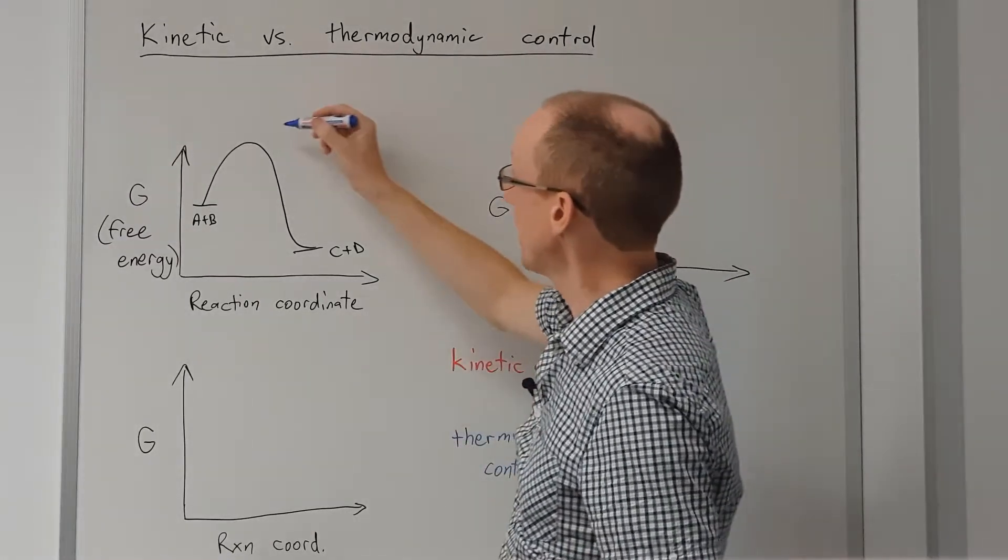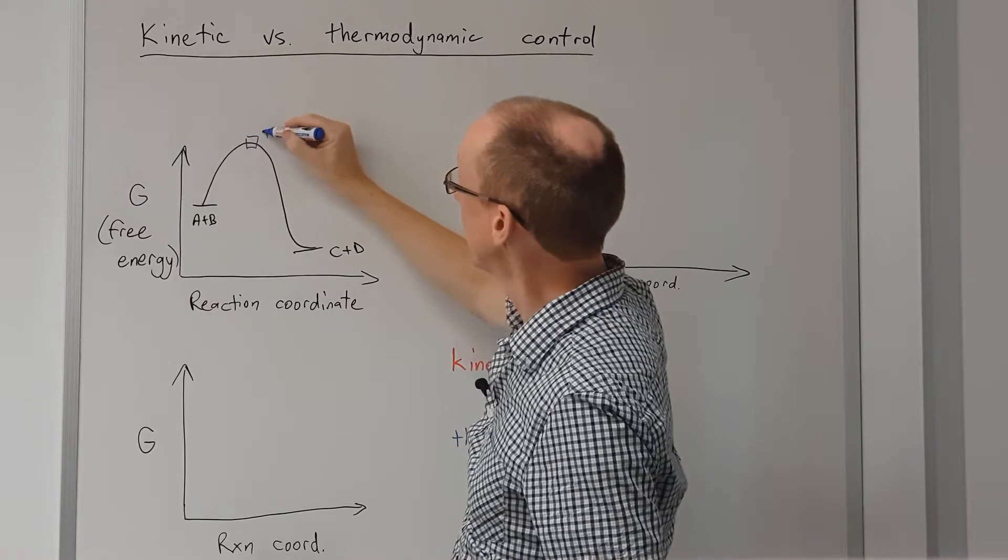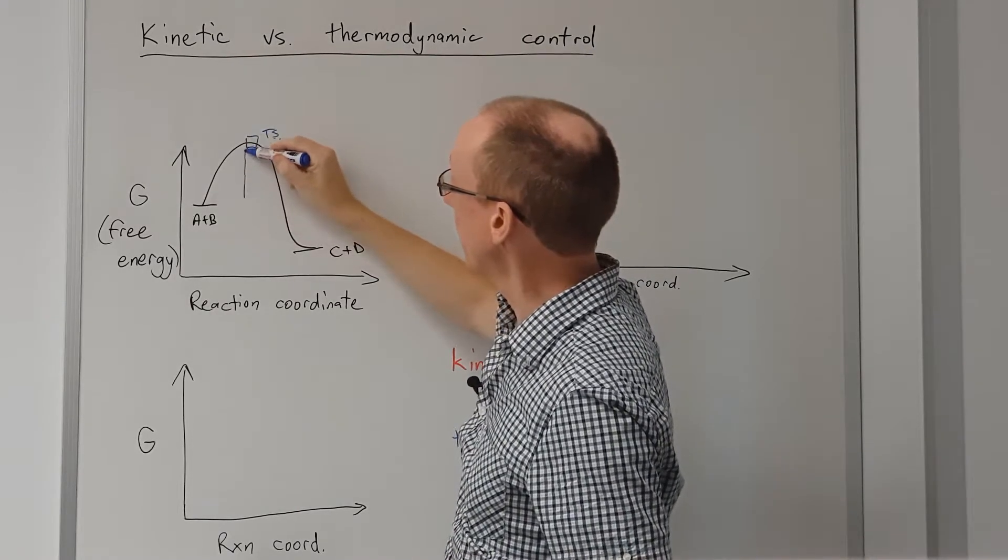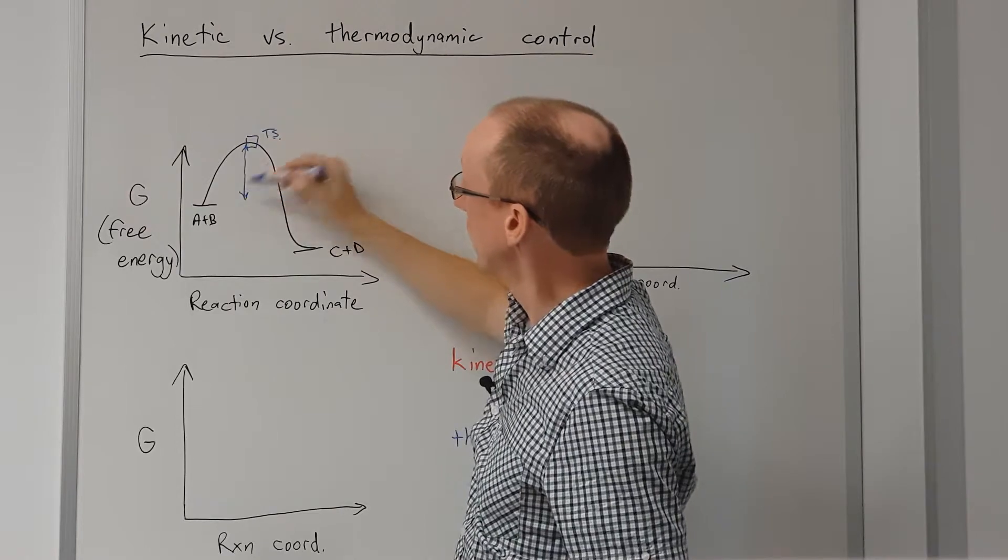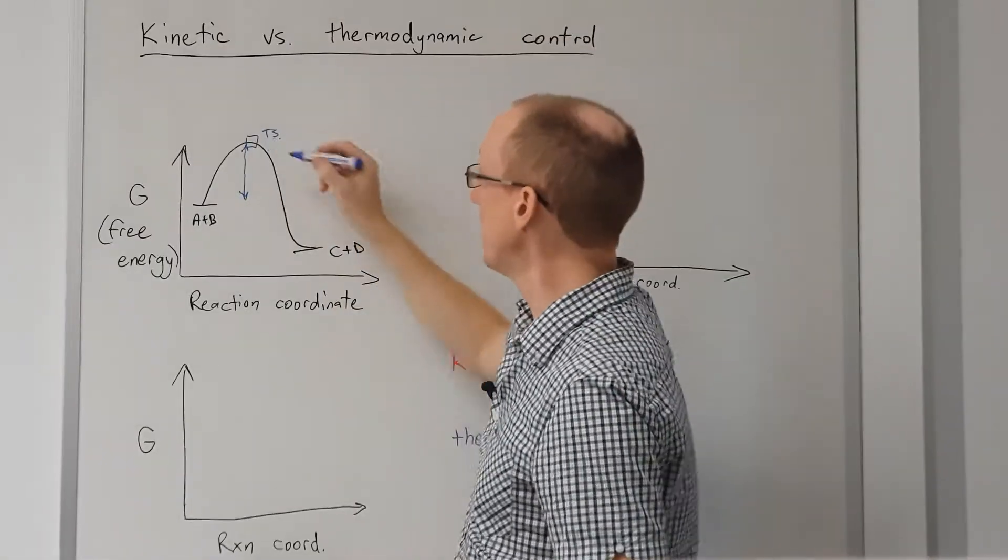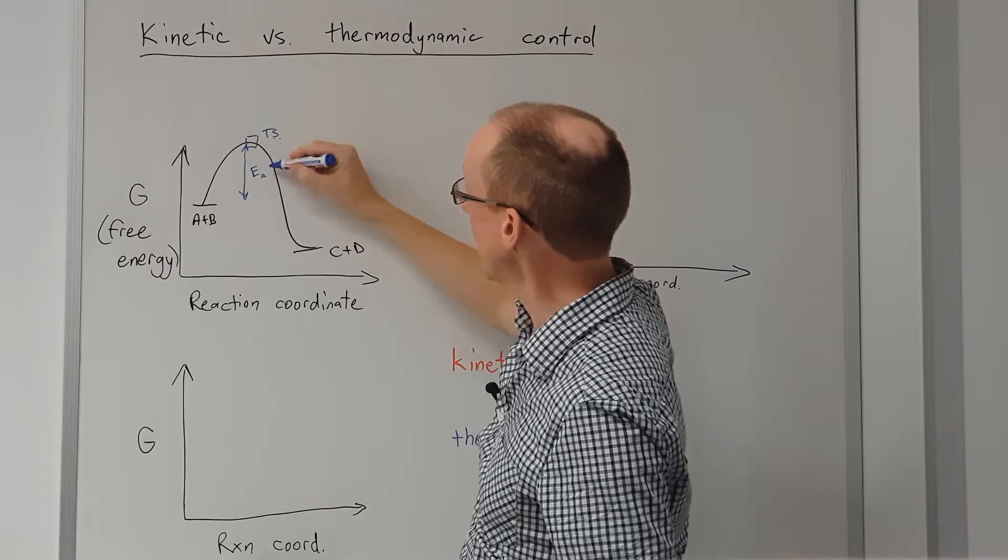Firstly, to get to that transition state there, we have to go through some kind of energy difference, and we term this the activation energy, E subscript A.